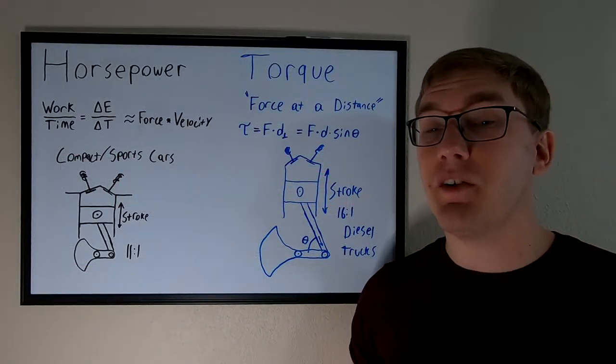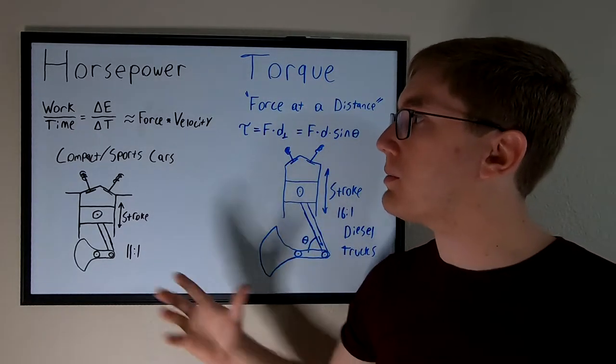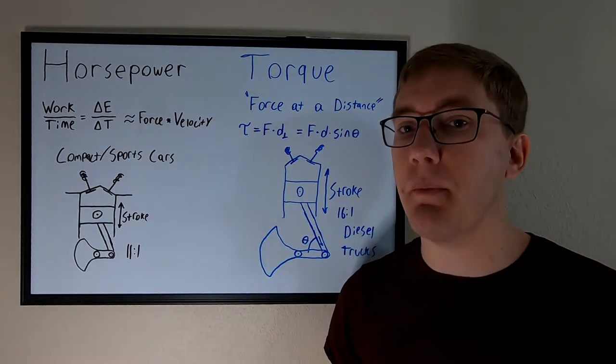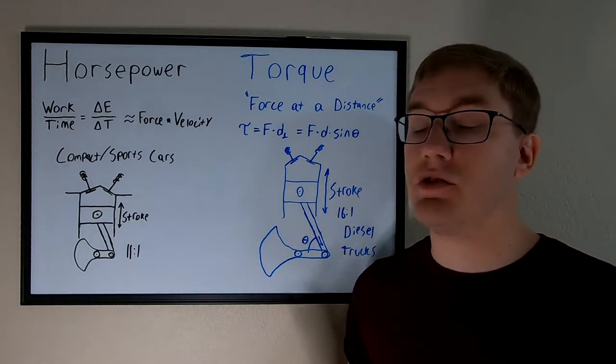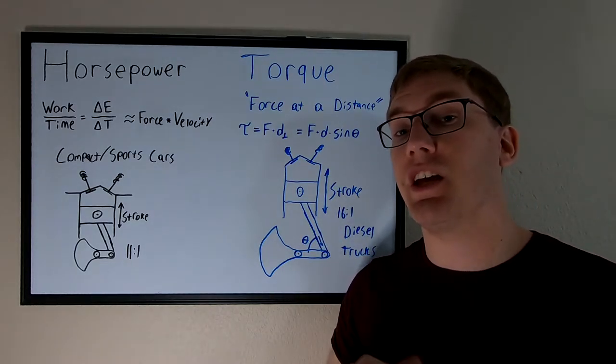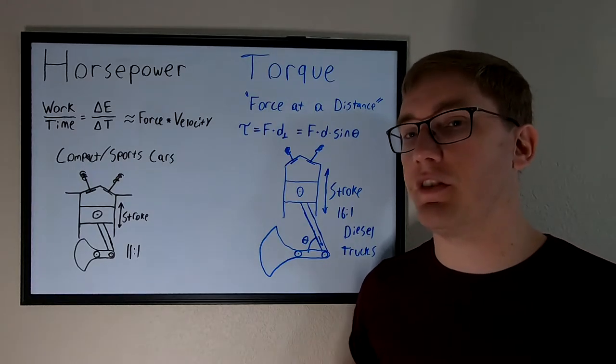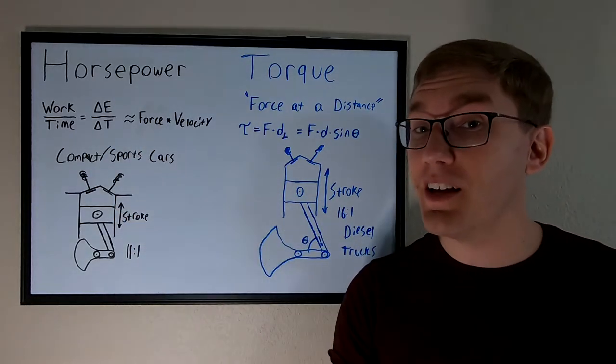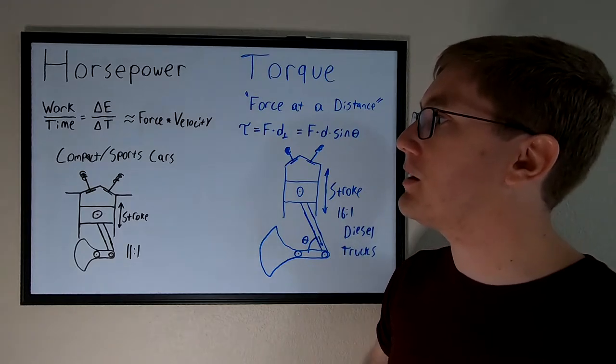So we'll start by defining what each of these two terms are beginning with horsepower. Horsepower is a measure of the amount of work that your engine can do over a given amount of time. Work is a measure of change in energy. In the case of internal combustion engines we're trying to change the chemical potential energy of fuel into kinetic energy, which is the car's movement. So this is really a measure of how quickly can we accelerate the vehicle. Sort of. We'll get into that a little bit more later.